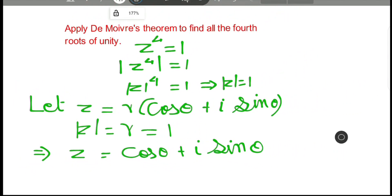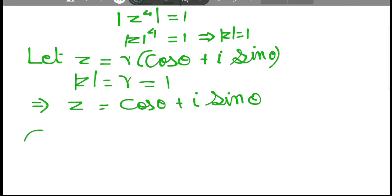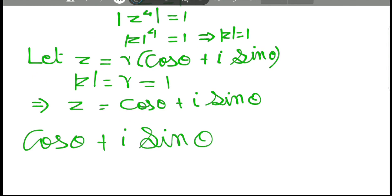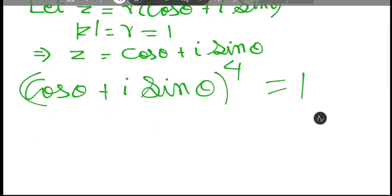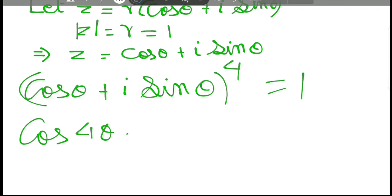Let's plug those values into the equation z to the power 4 equal to 1. So cos theta plus i sine theta, whole thing to the power 4, equals 1. Now we apply De Moivre's theorem, which says that cos theta plus i sine theta to the power m equals cos m theta plus i sine m theta.